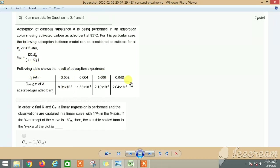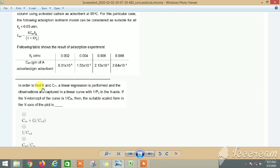This is the following data that we have. First of all, what it has asked us is in order to find K and C_m, we have to do a linear regression. First we have to plot a linear curve with 1/P_g in the x-axis. If the y-intercept of the curve is 1/C_m, we have 1/C_m as the intercept and 1/P_g as the x-axis.